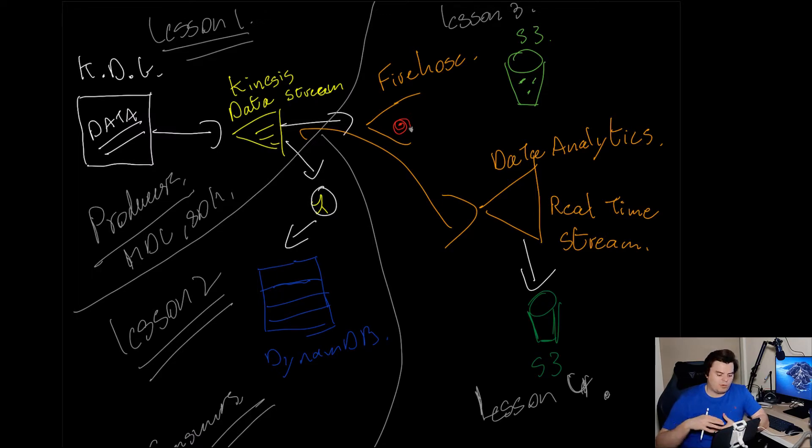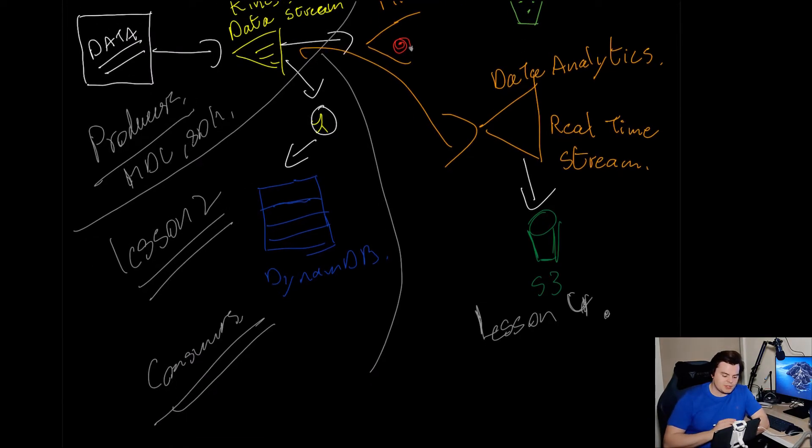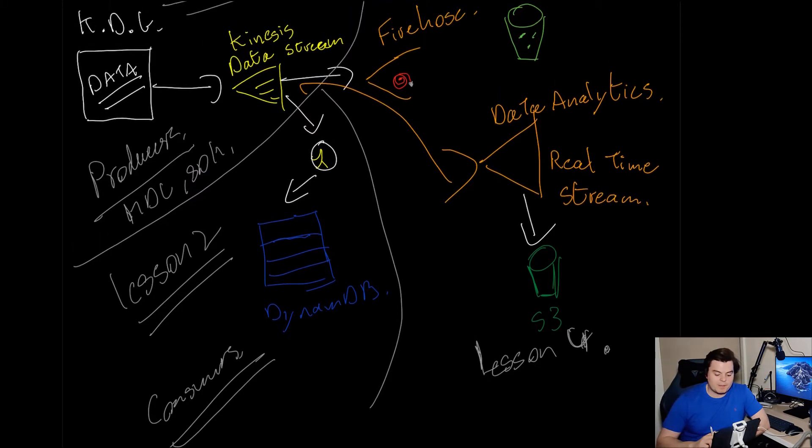Lesson two, which is down here, what we're going to do is use DynamoDB, which is a service database, and a Lambda function as a consumer and put that data into Dynamo. Again, we'll cover what a consumer is, we'll look at a bit of Lambda, a bit of DynamoDB. Nothing better than doing to really reinforce what you're learning.